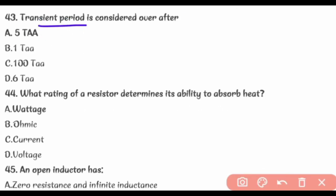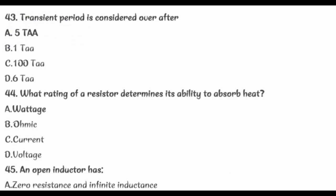Transient period is considered over after 5 tau.